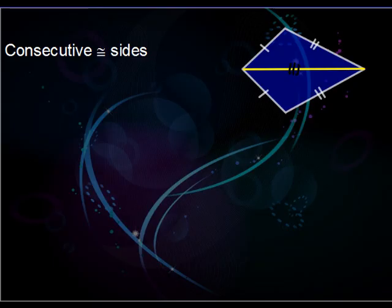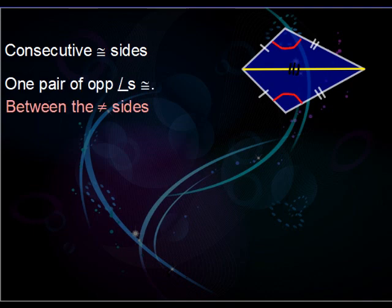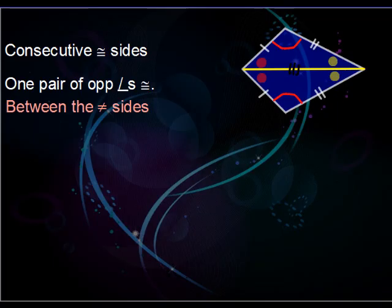SSS gives us two congruent triangles, and from that we know all their corresponding parts match. In this case, the opposite angles are congruent. It also means this angle here is congruent to this angle here, and this angle here is congruent to this angle here. Because of that, drawing this diagonal also gives us an angle bisector.